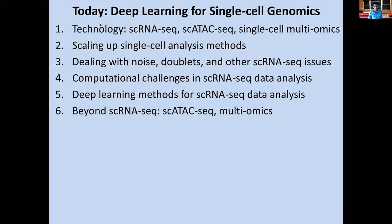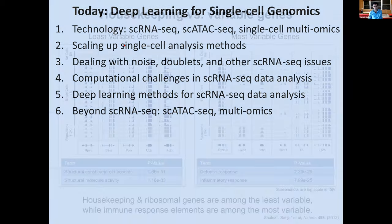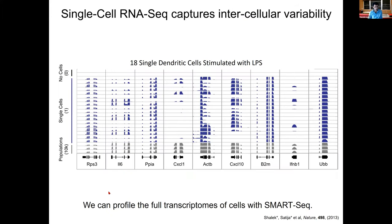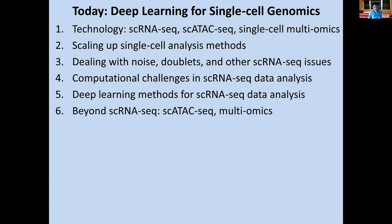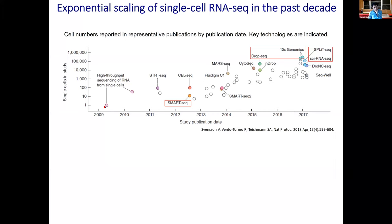This inter-cell variability can be captured systematically using single-cell RNA-seq. Housekeeping genes, the least variable, are always on. The most variable genes may only be expressed in one cell at a time. That's the basic premise — profiling information at the single-cell level. Technology to enable this has dramatically improved on a log axis from profiling maybe 10 cells at a time to tens of thousands and hundreds of thousands of cells at a time.